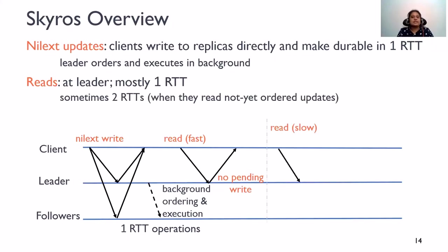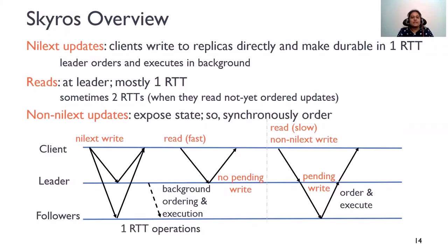Sometimes, reads incur two round trips. If the leader finds that there are pending updates to the object being read that have not yet been ordered, the leader synchronously orders and executes these updates before returning the result of the read. When updates expose state, they take two round trips as well. So, we have both one and two round trip operations in our protocol. However, real-world traces show that the fast case is the common case.